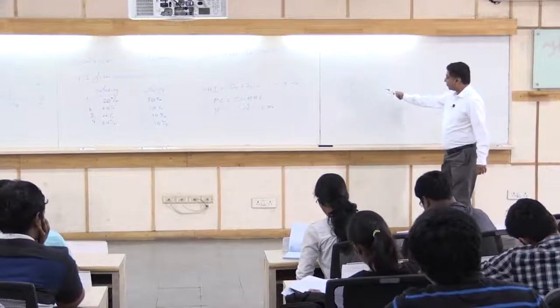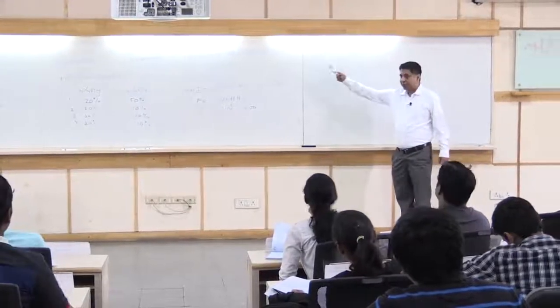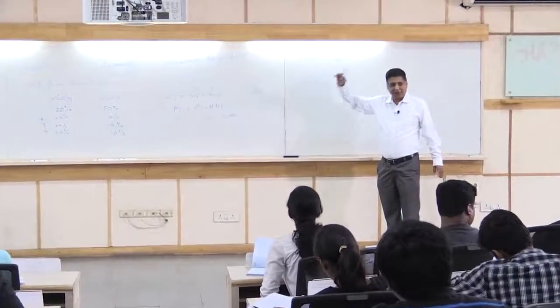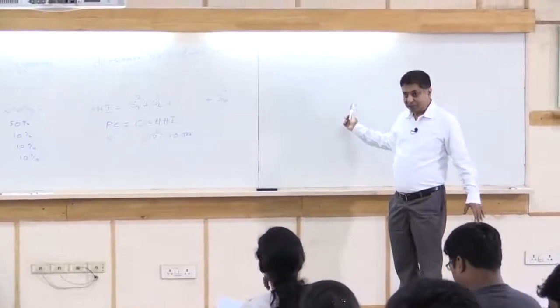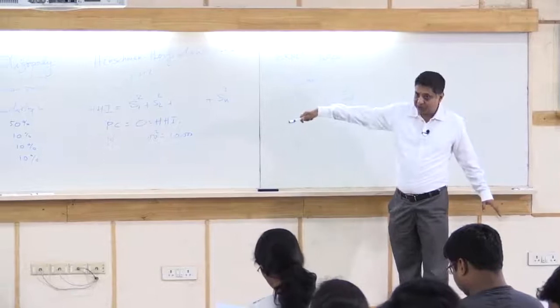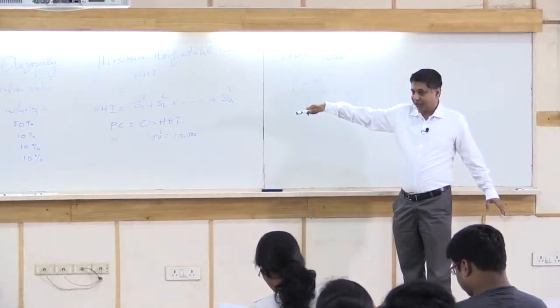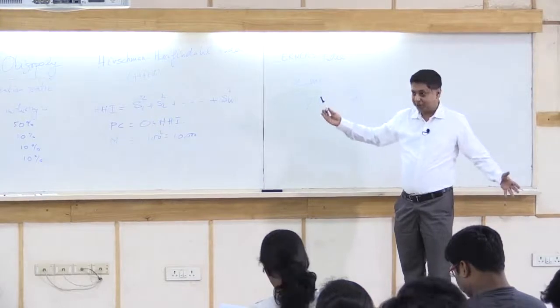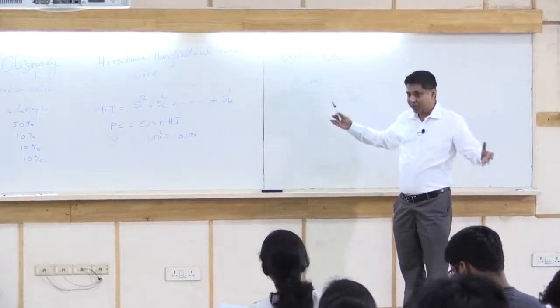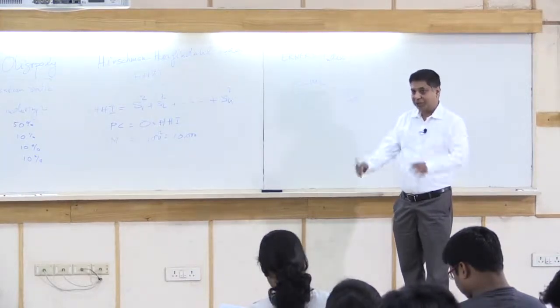This is actually a much better measure, you would say, more than concentration. Because remember when you said monopoly power, what did we say? Elasticity of demand, number of firms in the market, both mattered and the kind of competition that is there. All three together will determine what is going to happen.